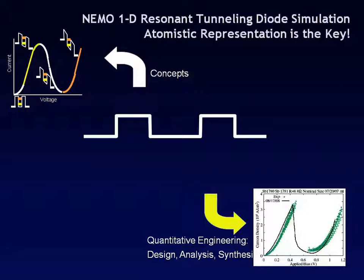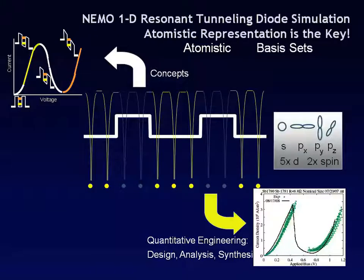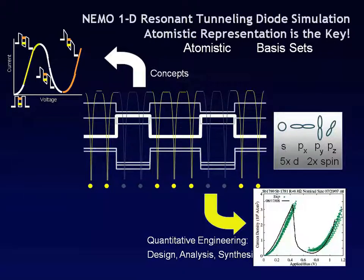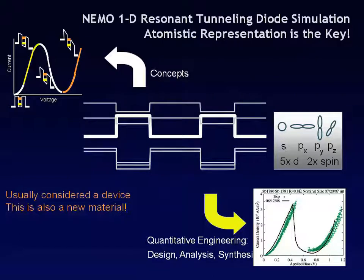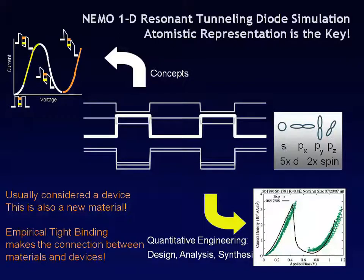NEMO1D was able to translate these concepts — these stick diagrams — into quantitative engineering. What it meant to do was putting the atoms back, putting potentials around these atoms, and treating these atoms electronically and structurally correctly in a tight binding description. What that meant is we really created a new material, not just a new device, and tight binding really allowed us to do that.